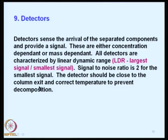The signal-to-noise ratio should be at least two for the smallest signal. The detector should be close to the column exit, and it must be at the correct temperature to prevent decomposition. We will discuss more about the detectors and the applications of gas chromatography in the next class.